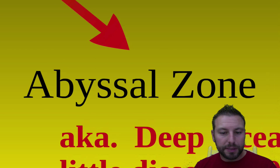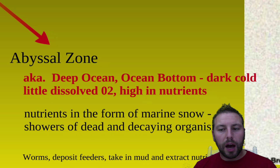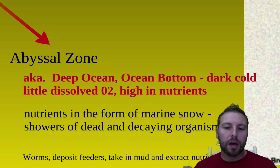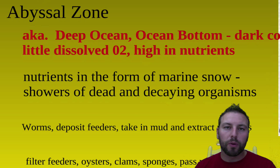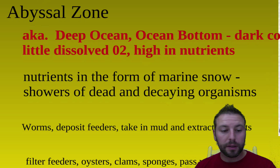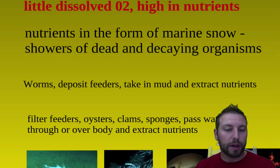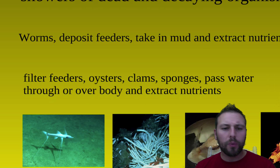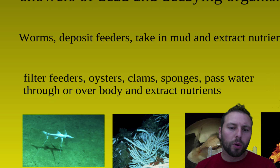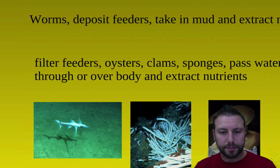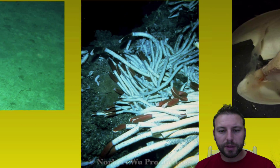Then we move into our abyssal zone — the deep ocean. It's dark, cold, with little dissolved oxygen but high in nutrients, and no sunlight penetrating down. We have nutrients in the form of marine snow, which is basically dead and decaying organisms sinking to the bottom. We see worms and deposit feeders that take in mud and extract nutrients, as well as oysters, clams, and sponges that pass water through or over their body.